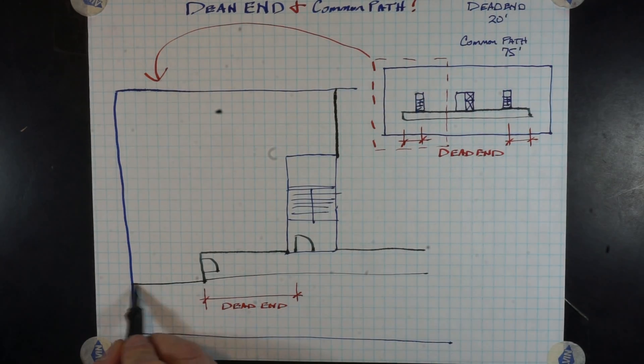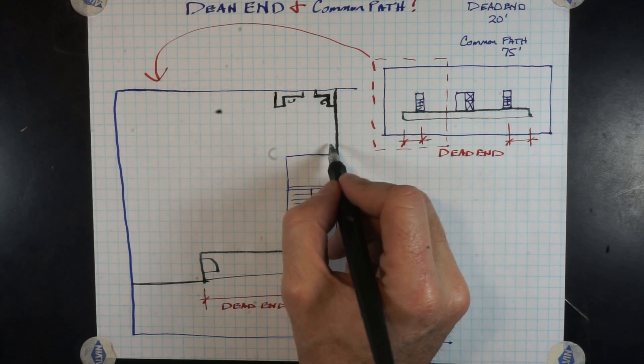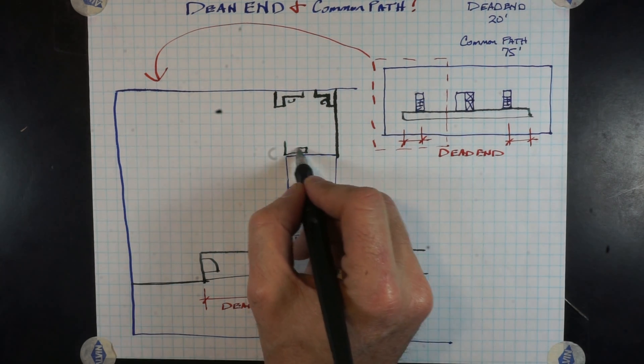Now, understanding this as a typical office layout, we're going to have some office furniture located within it, which needs to be understood by the code official and the fire marshal. And depending on its layout, it will create a common path of travel situation.